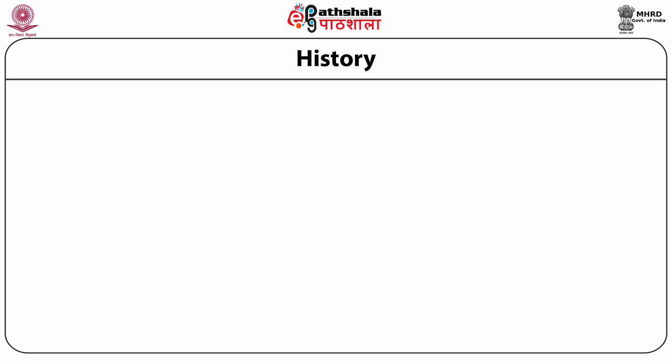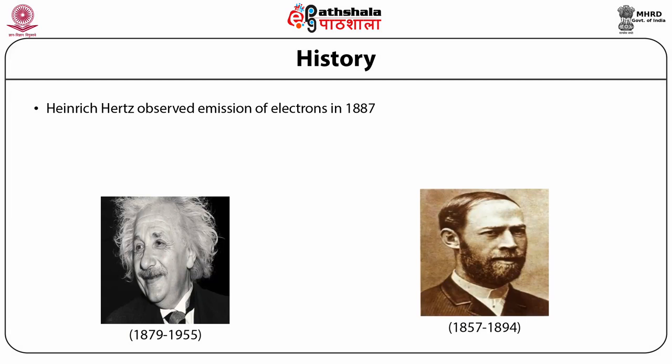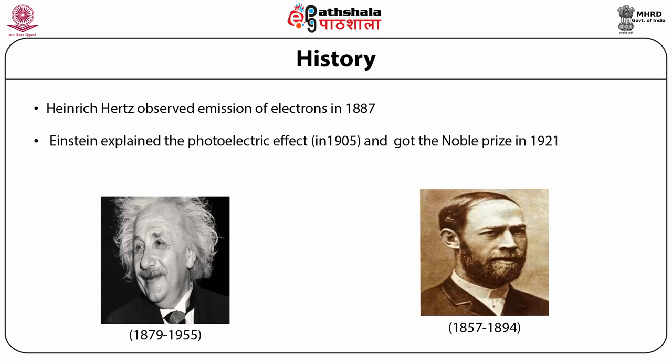Let us now discuss the history of X-ray photoelectron spectroscopy. Henry Hertz observed the emission of electrons in 1887 when he got an electric spark after illuminating electrodes in ultraviolet light. After 18 years, in 1905, Einstein explained the photoelectric effect and proposed that a beam of light is not a wave propagating through space, but rather a collection of discrete wave packets called photons. Einstein got the Nobel Prize in 1921 for his discovery of the law of photoelectric effect.